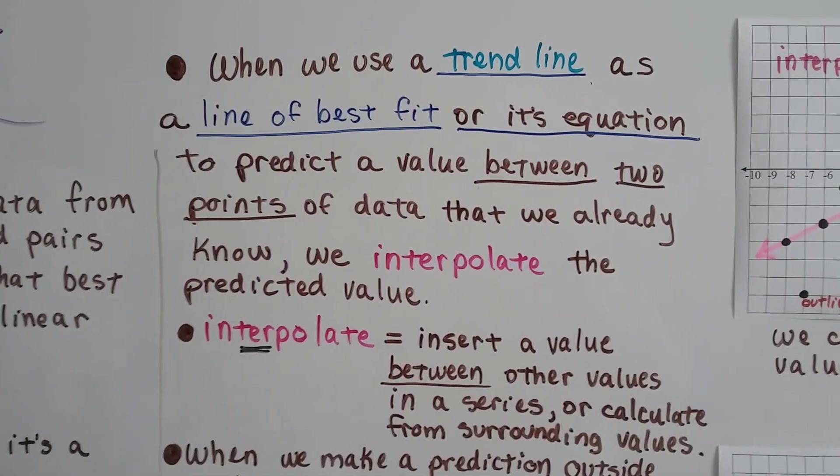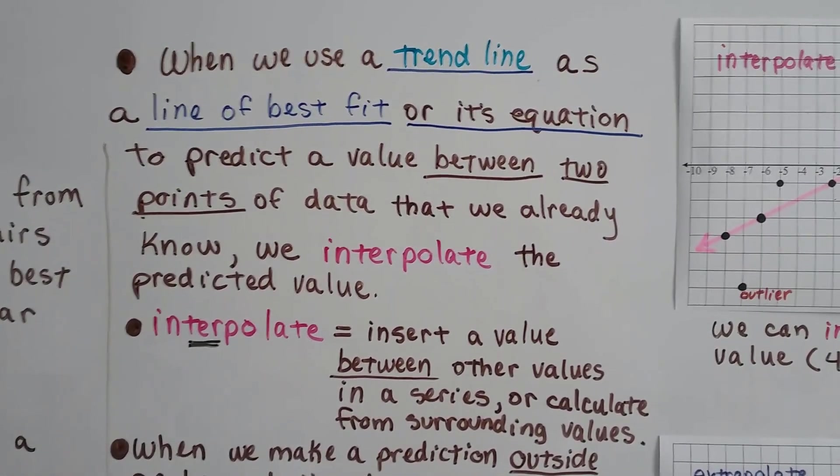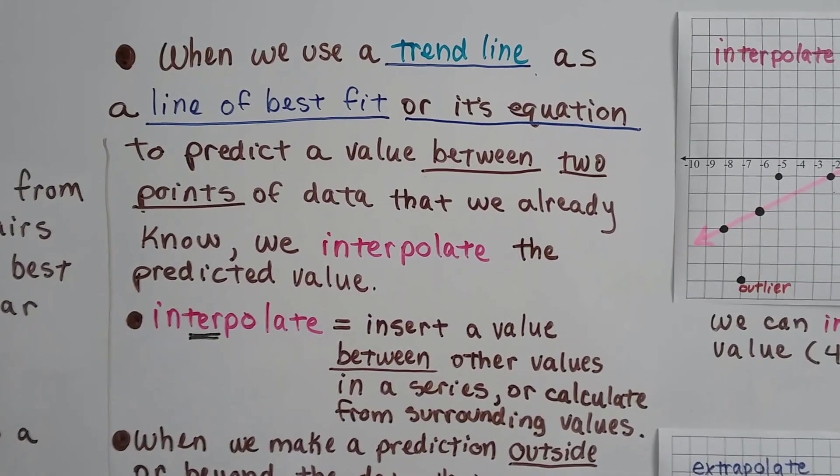So when we use a trend line as a line of best fit or its equation to predict a value between two points of data that we already know, we interpolate the predicted value. So that's a new word for you that you might want to write down.